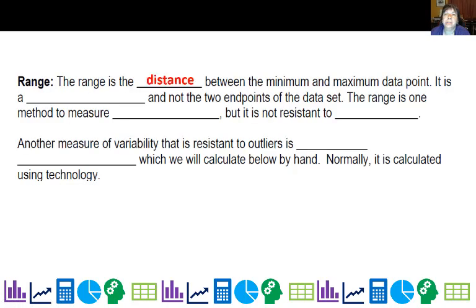Remember, the range is the distance between the minimum and maximum data points. It is a single number, not the two endpoints of the data set. So you might say it went from 2 to 20, but the range would actually be 18. It's one method to measure variability, but it is not resistant to outliers. If I have a really high point, it's going to pull it up automatically.